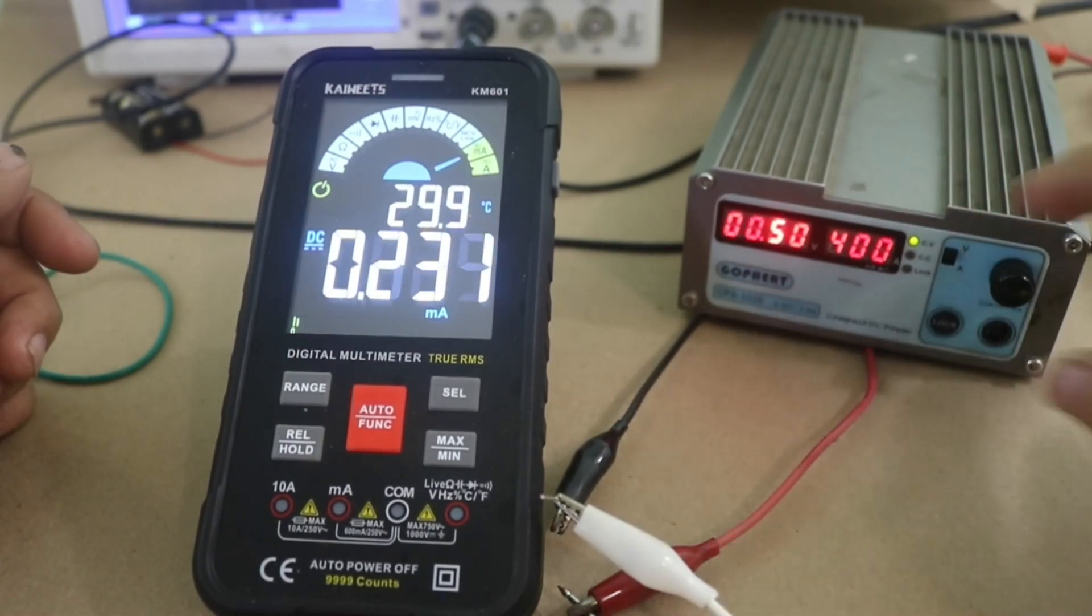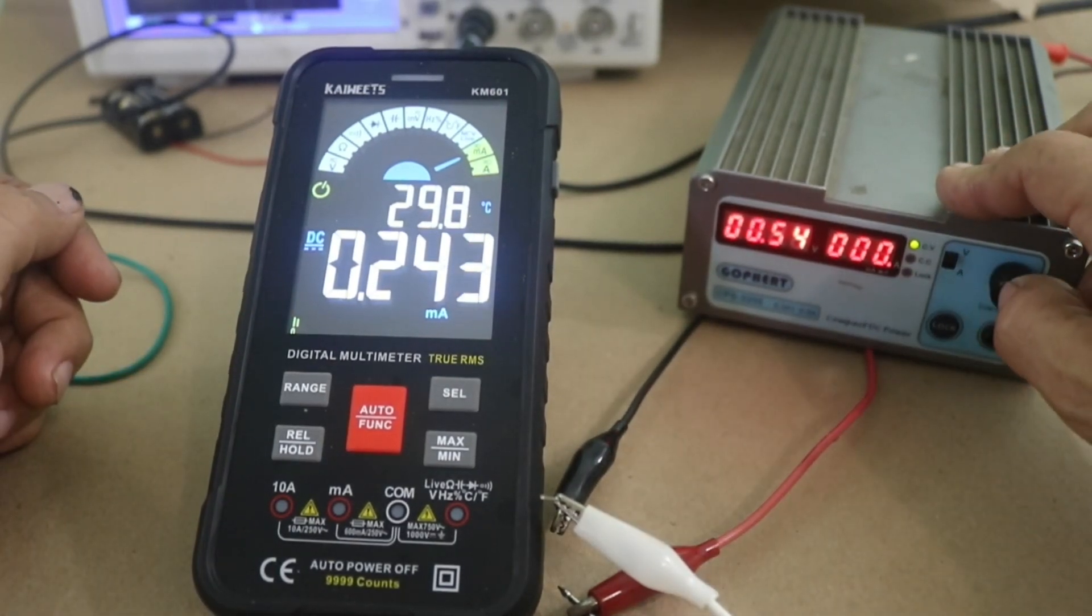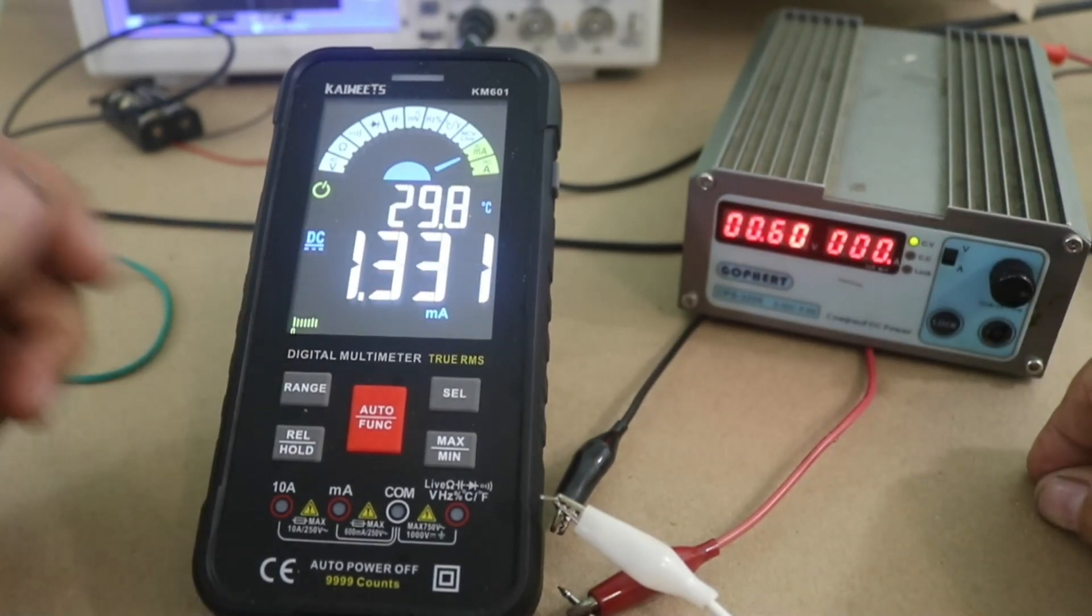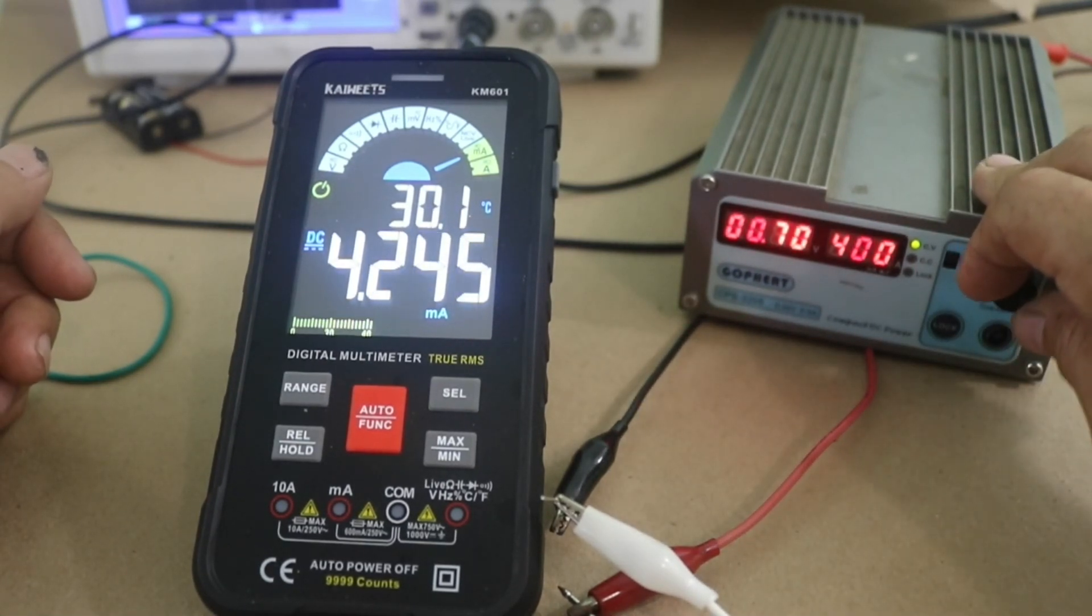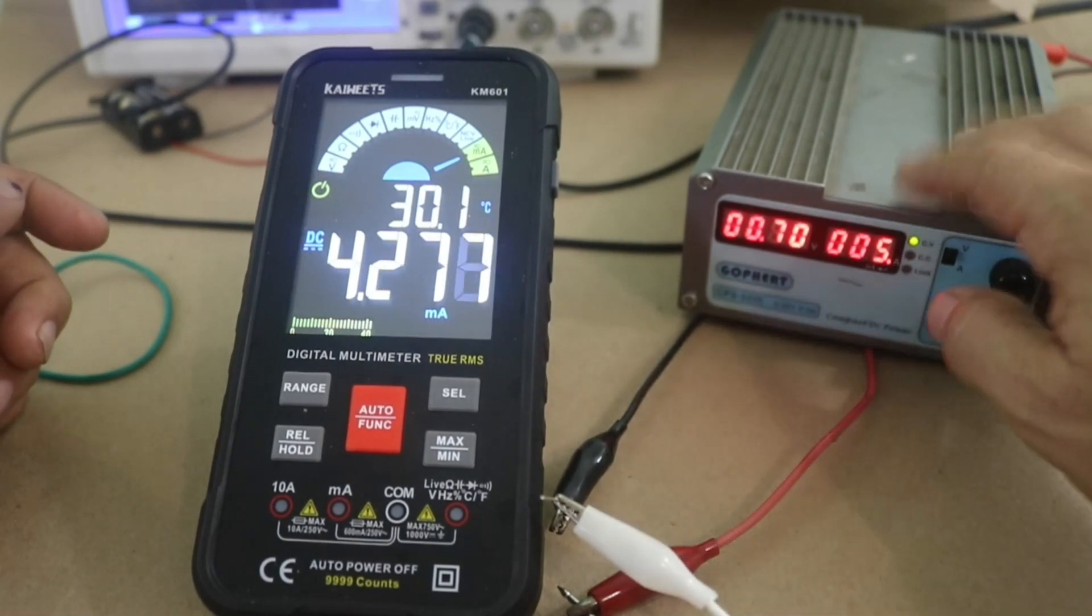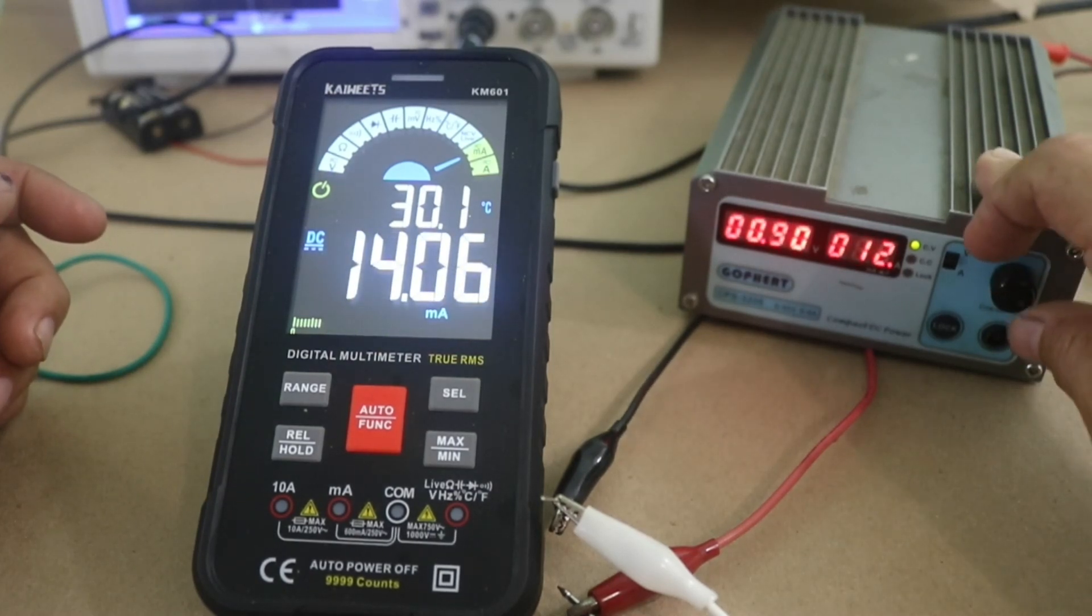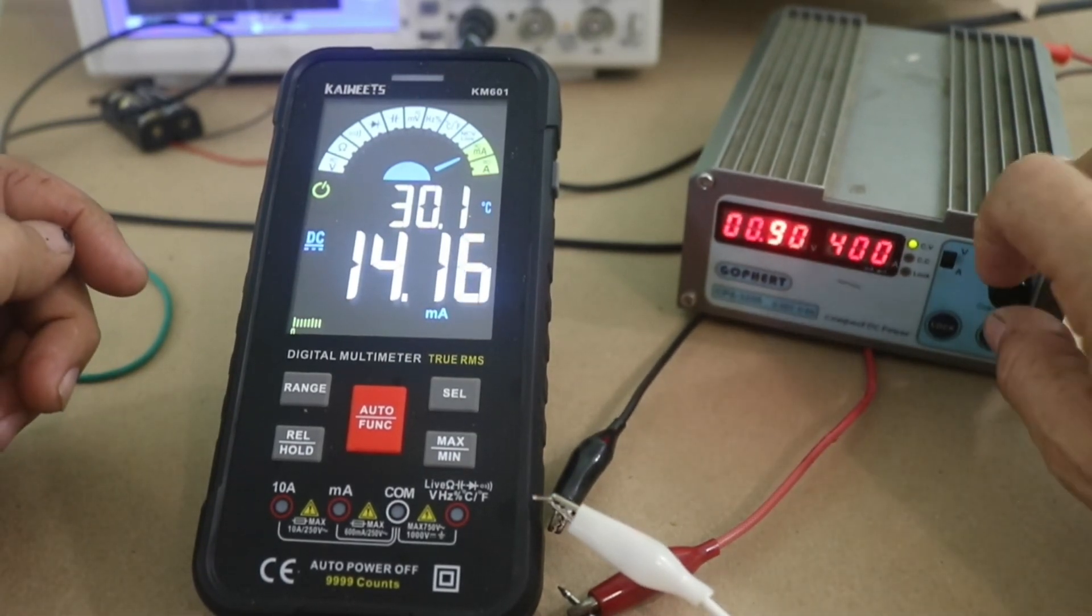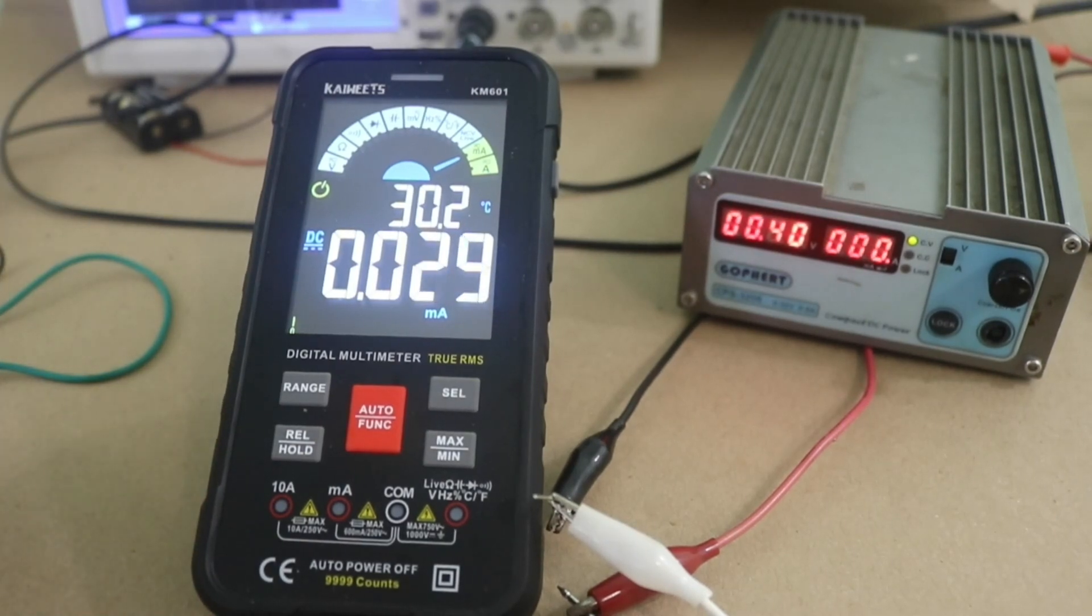Now at 0.5 the current slowly increases. 0.6 volts, we now have 1.3 milliamps. 0.7 and now we have 4 milliamps, and increasing the voltage further, now the diode is conducting more current. So we see that our diode starts to conduct the current at around 0.6 volts.